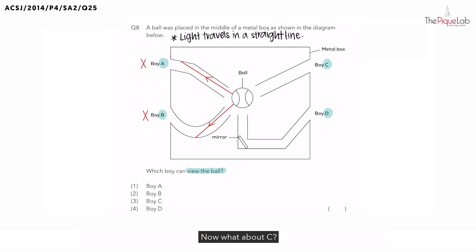Now what about C? For C, light reflected off the ball which travels in a straight line, is able to reach boy C. So is boy C able to see the ball? Yes.